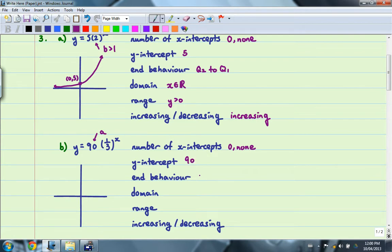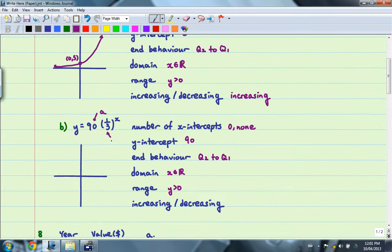The end behavior will still be quadrant 2 to quadrant 1. The domain will be all real numbers. The range will be positive. And this time, if you notice, the B value will be between 0 and 1, so we have a decreasing function.